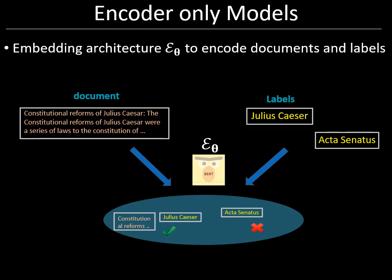Language encoders solve this problem by learning to encode the documents and the labels in a shared space. Unfortunately, such models may suffer if the label text is not descriptive enough, which is referred to as semantic gap. For example, a DistilBERT encoder failed to predict Acta Senatus — which refers to the reform of recording and issuing minutes of discussions of the Roman Senate — as the label text didn't capture the whole meaning.